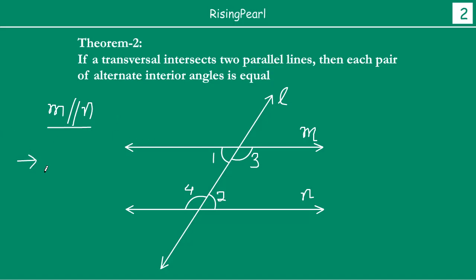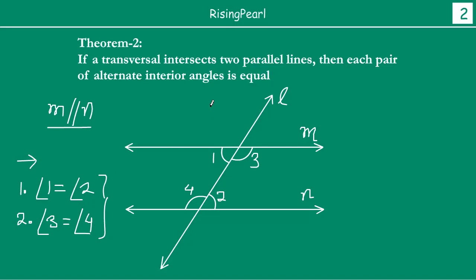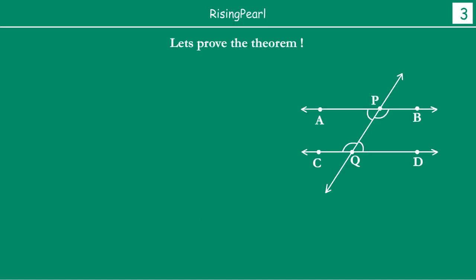We are asked to prove two things: first, angle one is equal to angle two; and second, angle three is equal to angle four. We have two pairs of alternate interior angles — pair one consists of these two angles, and pair two consists of those two angles. Let us go ahead and do the actual proof.